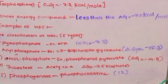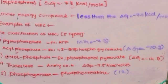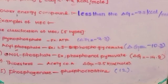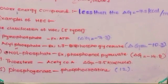The five types are: pyrophosphate, acyl phosphate, enol phosphate, thioester, and phosphagens. Now let me give examples of each.